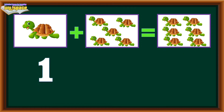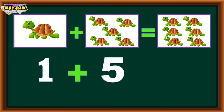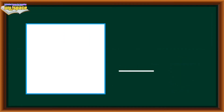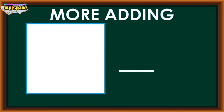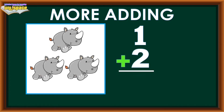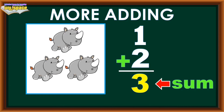1 rhino plus 2 rhinos equals 3 rhinos. The answer, which is 3, is called the sum.